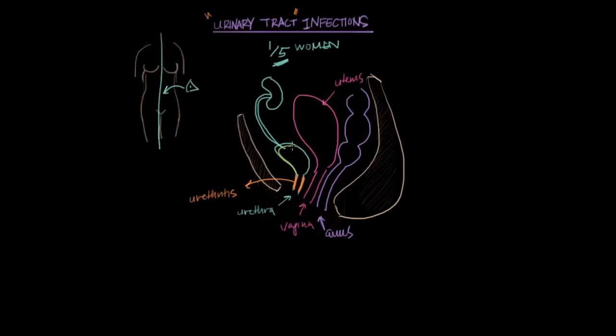Infection of the urethra is called urethritis. Infection of the bladder, this portion right here, is called cystitis. So infection of the bladder is called cystitis. And then finally, infection of the kidneys is called pyelonephritis. And the fact is that when most people talk about UTIs, they're actually talking about cystitis, or infection of the bladder.